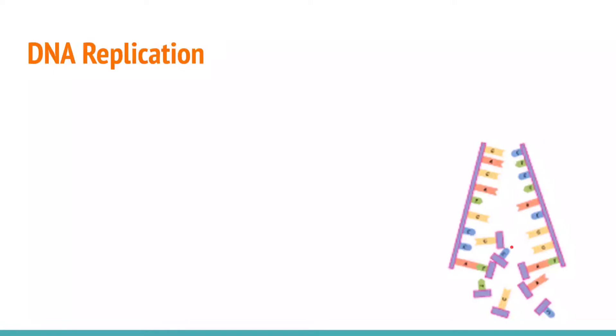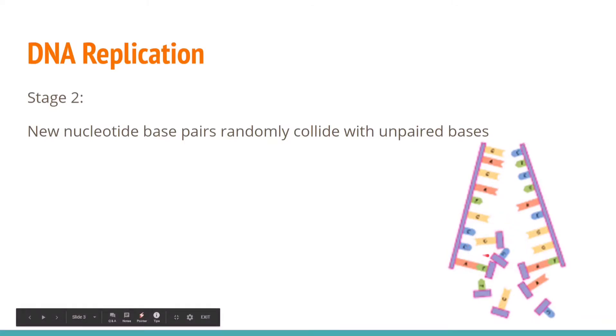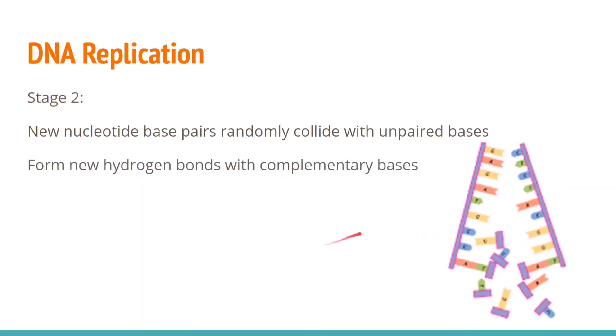The next part of DNA replication is when new nucleotide base pairs randomly collide with the unpaired bases. Here are some nucleotides and they randomly collide with these unpaired bases. When they find their complementary bases they form new hydrogen bonds. For example, A and T here.